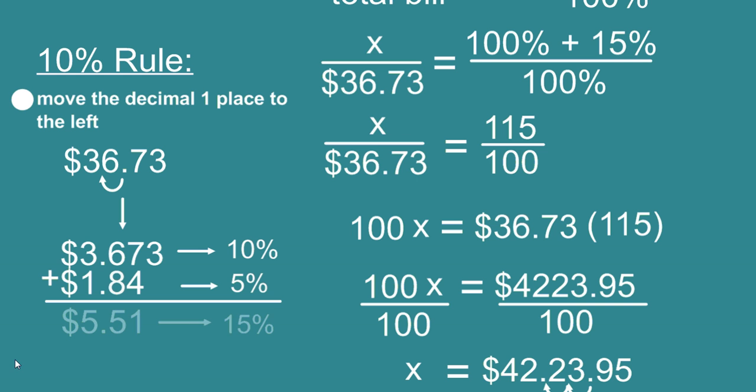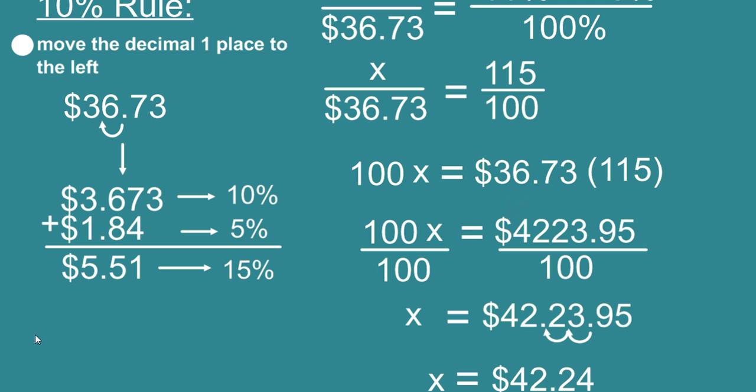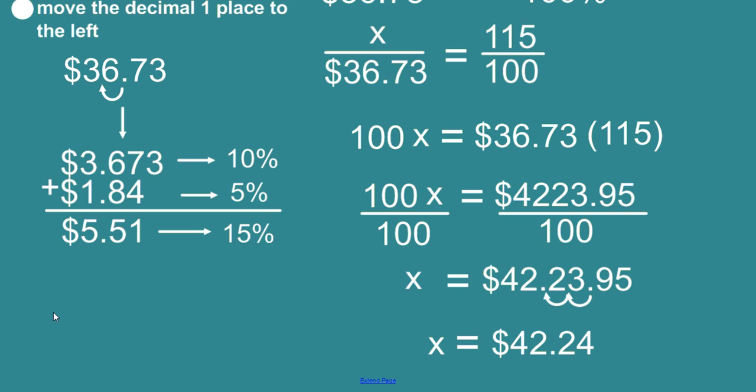Then we simply add them together and we have a total of 15%. Our tip is $5.51. Now if we want to know the cost after the tip we take our original cost plus the tip and we get our answer. So you can find it either way but the 10% rule saves a lot of time.